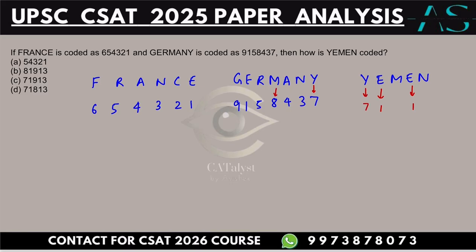So for Yemen: E=1, Y=7, M=8, E=1, N=3. That gives us 71813. Option D is our correct answer.